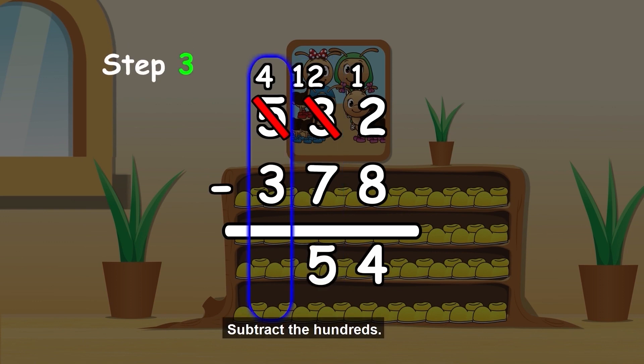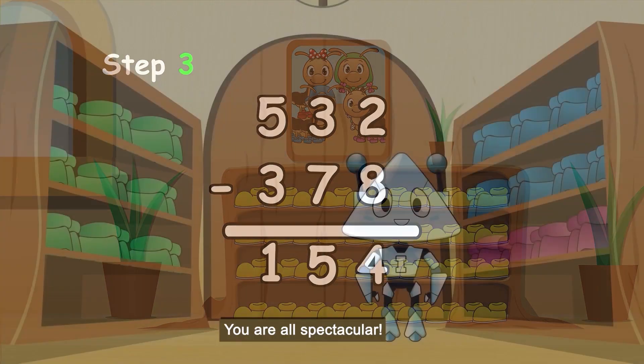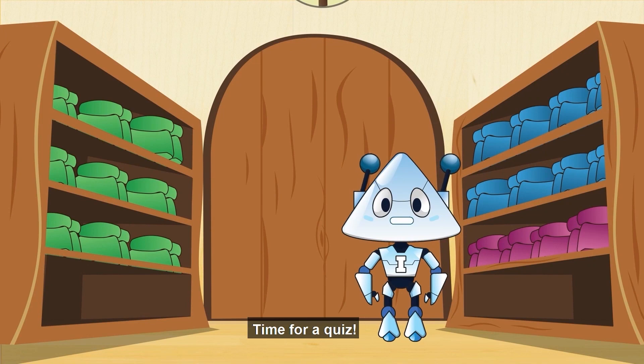Step 3. Subtract the hundreds. 4 minus 3 equals 1. So, 532 minus 378 equals 154. Excellent! You are all spectacular! Time for a quiz!